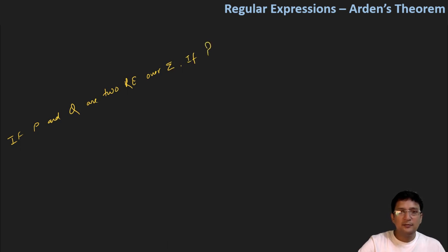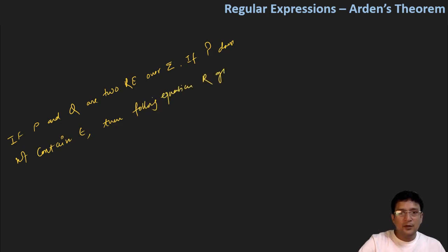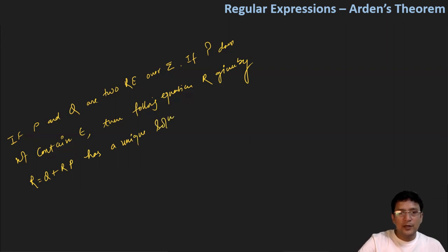If P does not contain epsilon — meaning in the regular expression of P, there is no place for epsilon — then the following equation in r, given by r = q + rp, has a unique solution, that is r = qp*. Now let us prove two things: first, that r = qp* is a solution, and second, that it is unique.